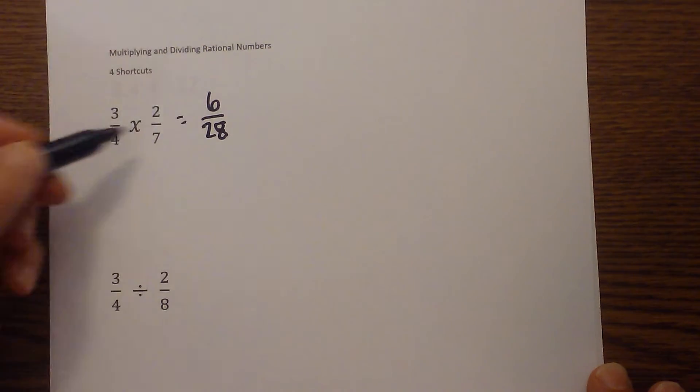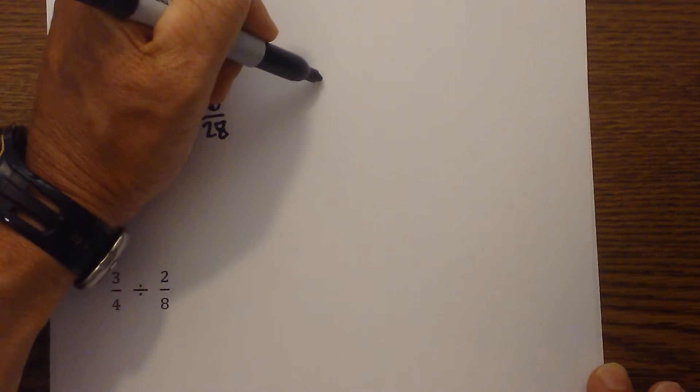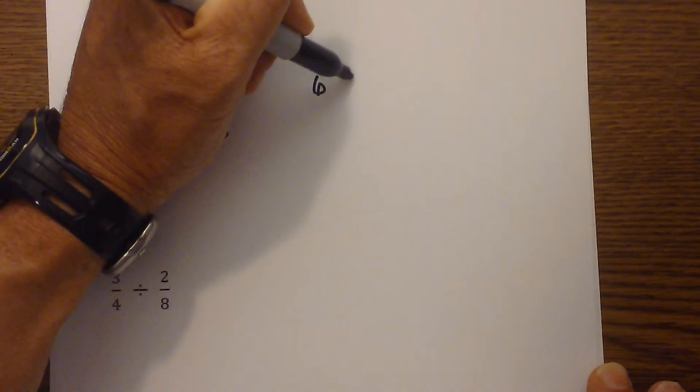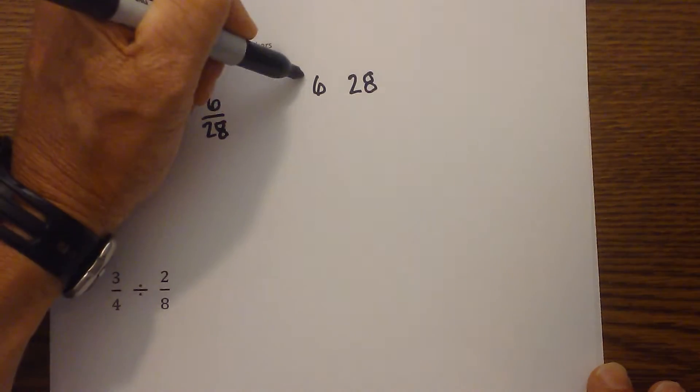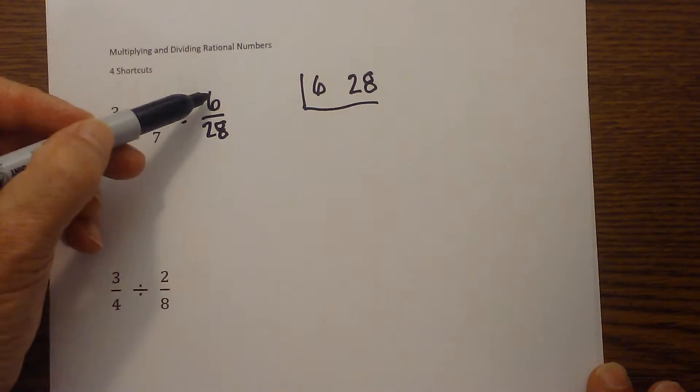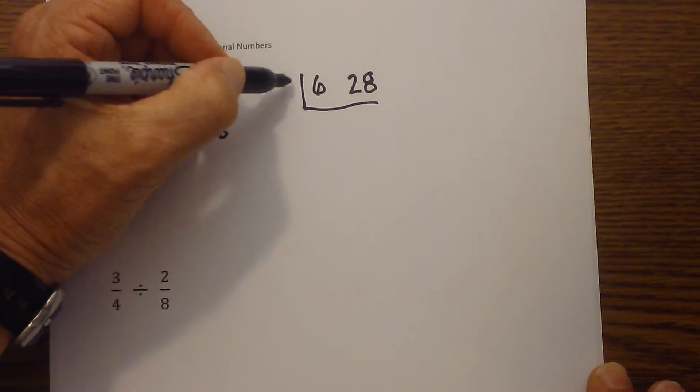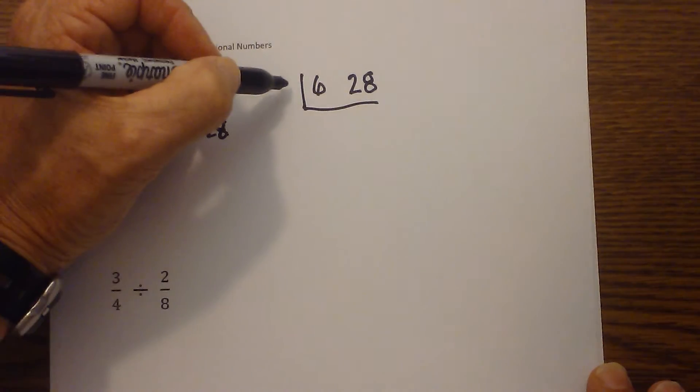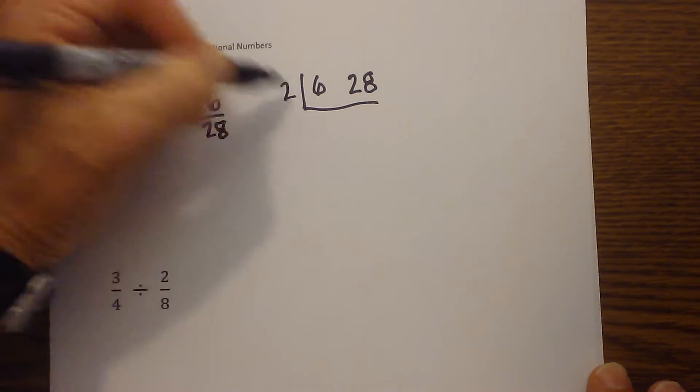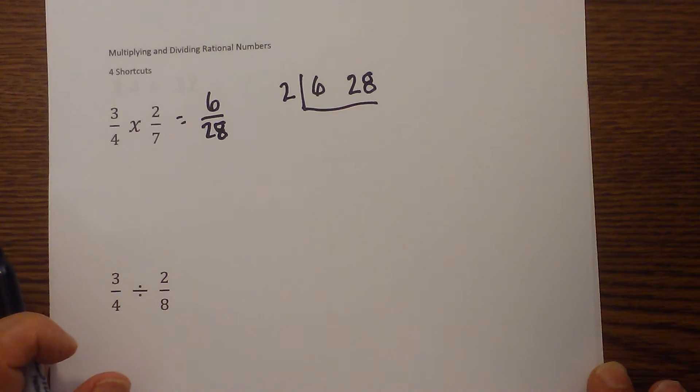Now at this point you simplify. And if you have a little trouble with simplification, you can use this technique, the ladder technique. You write the numerator first, the denominator second. Then you draw this box underneath and divide by any number you can think of that divides into both of them.